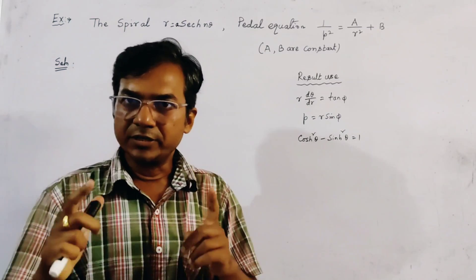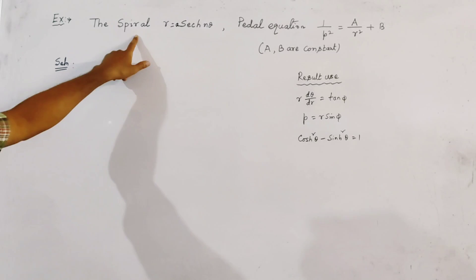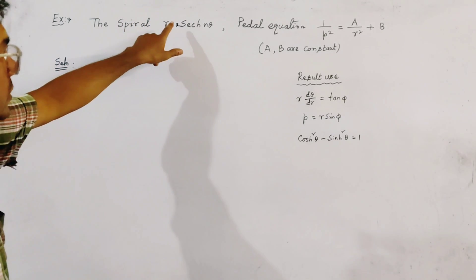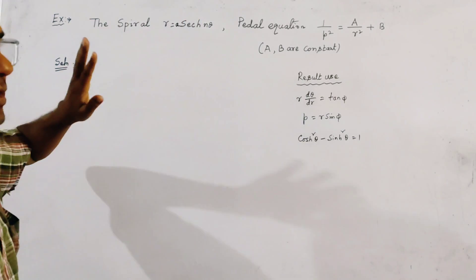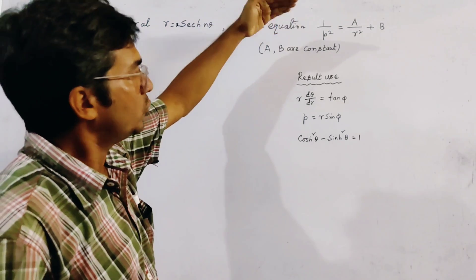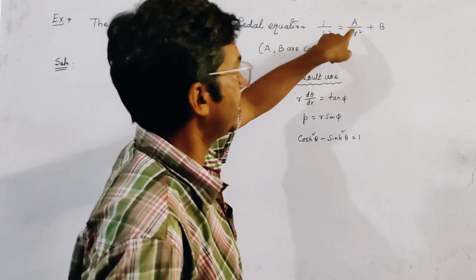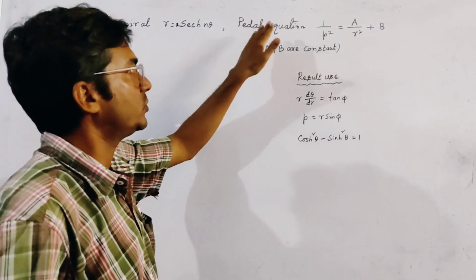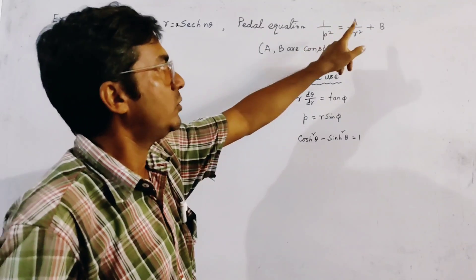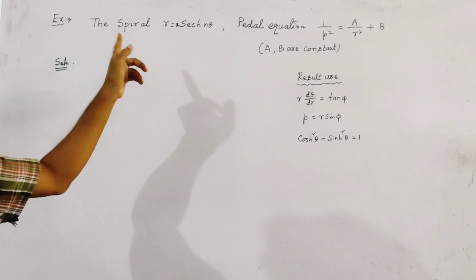In this lecture, we are trying to find out the pedal equation of a spiral. The equation of the spiral is given by R = A·sec hyperbolic(nθ). This equation is to be transferred to the pedal equation, which is given in the form 1/p² = A/r² + B. We have to find the pedal equation in this form, identifying the constants A and B for the pedal equation of the spiral.